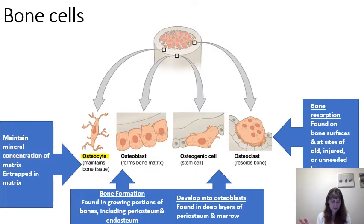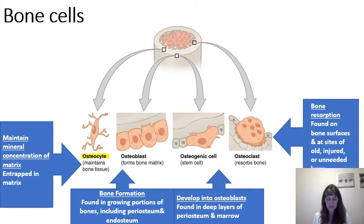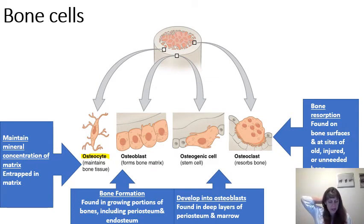Osteocytes have two major functions. They maintain the protein and mineral content of the surrounding matrix — a dynamic process with continual turnover. Osteocytes secrete chemicals that dissolve adjacent matrix and release minerals into circulation, then rebuild the matrix, stimulating deposition of new hydroxyapatite crystals. The turnover rate varies from bone to bone. Osteocytes also participate in repairing damaged bone.